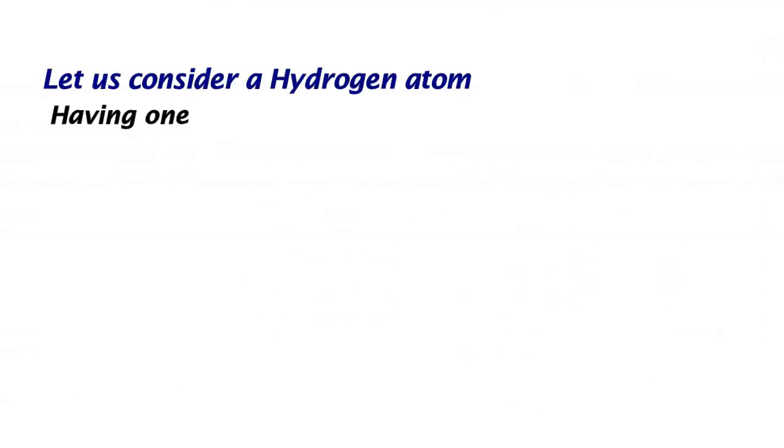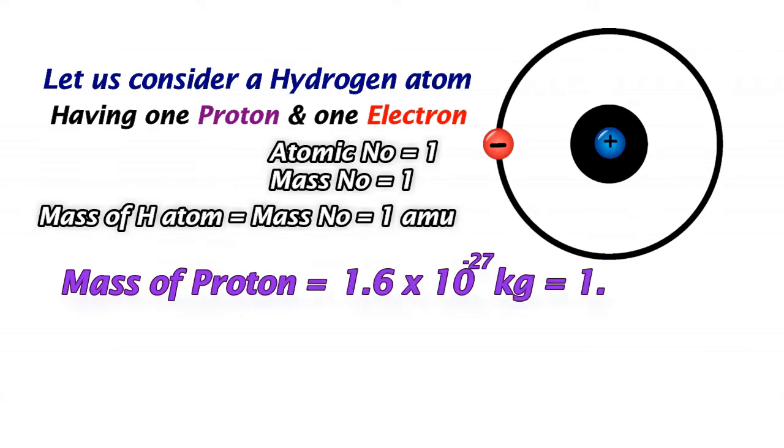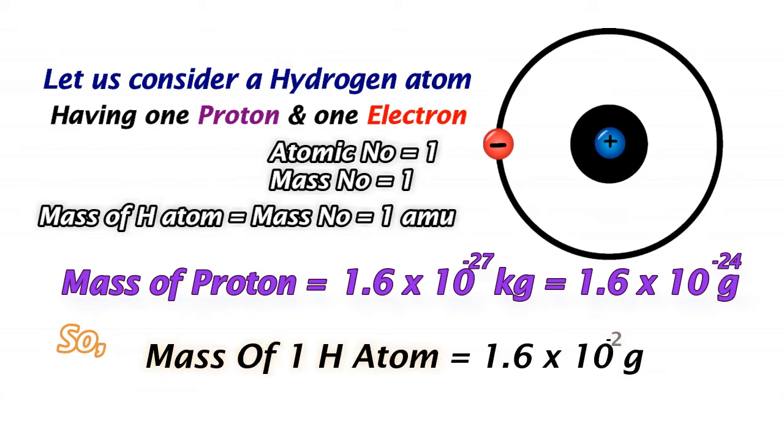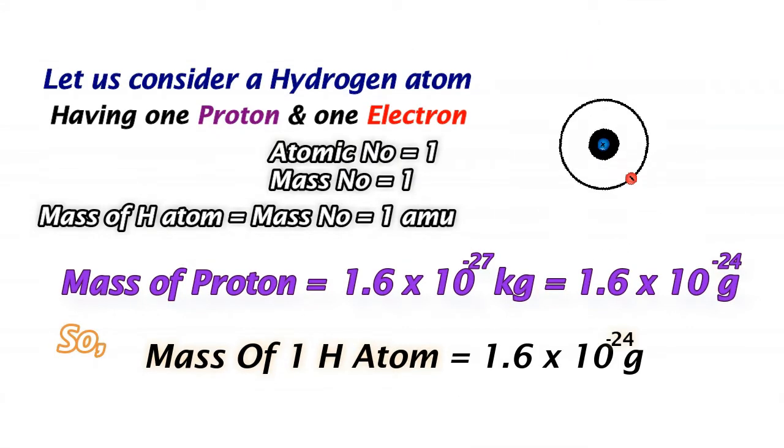Consider a hydrogen atom having 1 proton and 1 electron. We know that atomic number is 1 and mass number is 1. So the mass of hydrogen will be equal to 1 atomic mass unit, as it has 1 proton and the mass of the atom equals its mass number. So, the mass of the hydrogen atom is equal to 1.6 × 10^-24 grams.